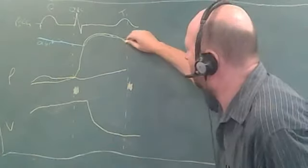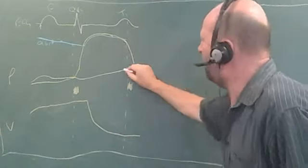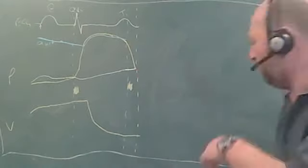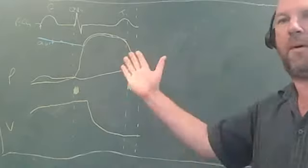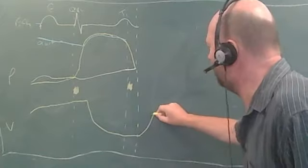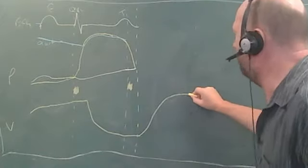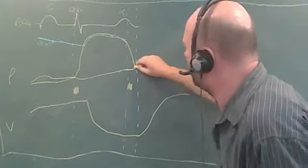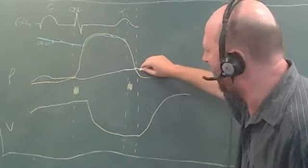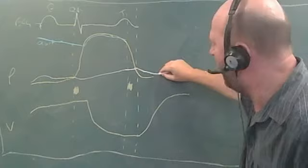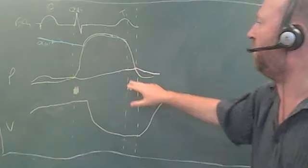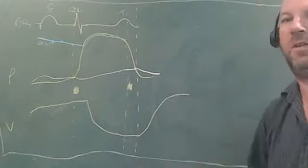Ventricular pressure continues dropping for as long as ventricular pressure is greater than atrial pressure. As soon as ventricular pressure drops below that of atrial pressure, the atrioventricular valves open and blood starts rushing back into the ventricle — this is the period of rapid filling of the ventricle.